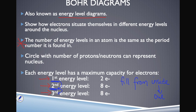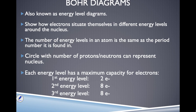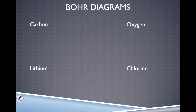So we fill energy levels: first, second, third. Let's see how this works. Carbon is our first example — carbon has atomic number six, so it will have six electrons.